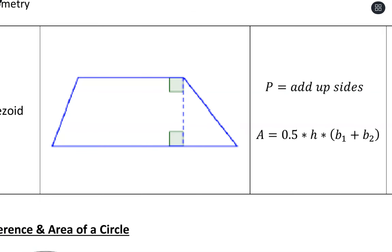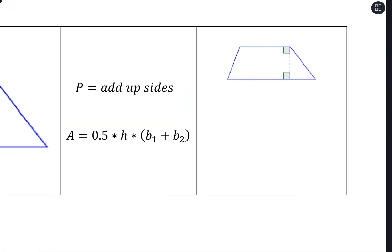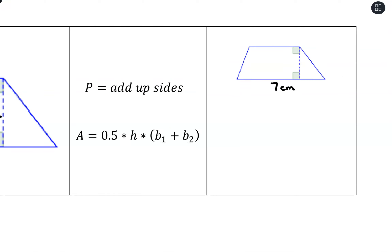The last polygon is the trapezoid. For perimeter, we go along the outside and add them up. For area, we have two bases — the sides that are parallel to each other are base one and base two, while the non-parallel sides are not part of the base. The height is again the perpendicular dropped between the bases. Let's say the dimensions are seven, five, two, and three centimeters with a height of one centimeter. Perimeter: seven plus two plus five plus three equals seventeen centimeters.